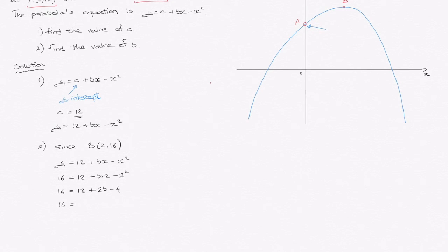I can subtract the 4 from the 12, so 12 minus 4 equals 8 plus 2b. And I can now subtract 8 from each side, leading us to 8 equals 2b.